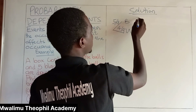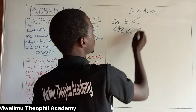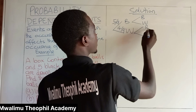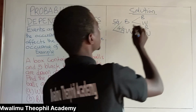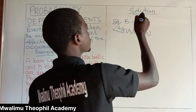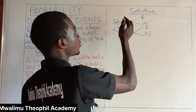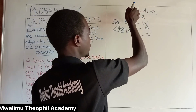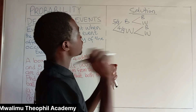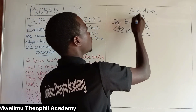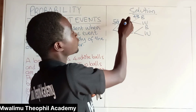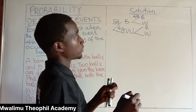Now let us see the chance for drawing a second ball. A second ball also can be black or white. What is the chance for drawing a black ball in the second chance? We have to remember that in the first draw we drew a black ball, so the number of black balls will remain with four black balls. So it is four out of eight — out of eight, not nine, because we have already removed one black ball, so we are remaining with a total of eight balls.